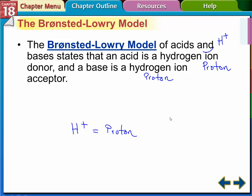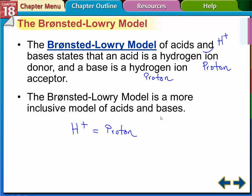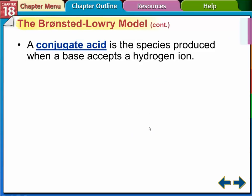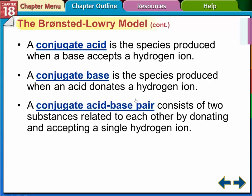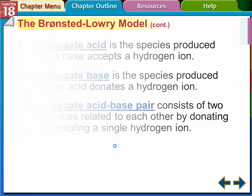The more inclusive model is the Bronsted-Lowry one, which is the one we're going to use most in this class. In this model, an acid is a hydrogen ion donor — a proton donor — and a base is a hydrogen ion acceptor, a proton acceptor. We're also going to deal with conjugate acids, conjugate bases, and conjugate acid-base pairs. When we have an equilibrium equation with an acid and base forming products, those products on the right side react and go back to form the reactants, becoming conjugate acids and conjugate bases.